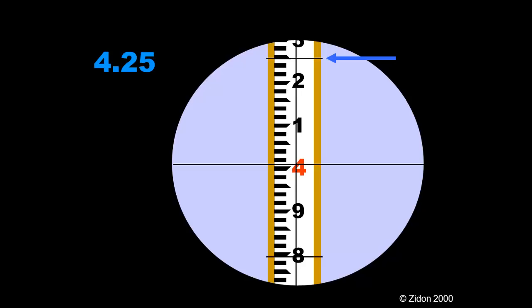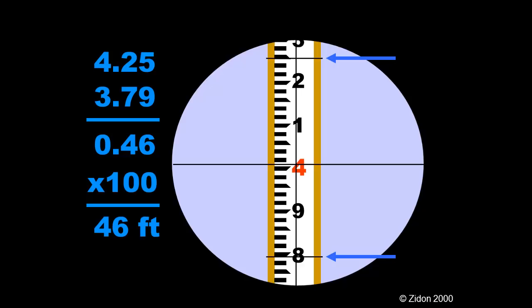The top stadia hair is four point two five feet. The bottom stadia hair is three point seven nine feet. Subtract and multiply by one hundred, and we find that the rod is forty six feet from the instrument.